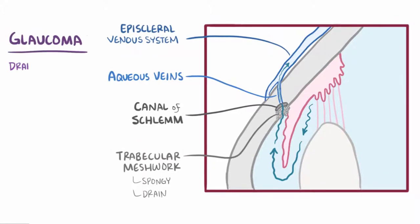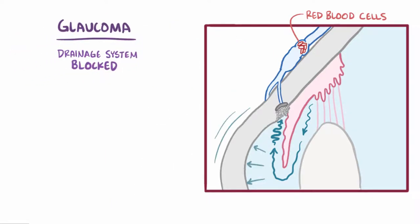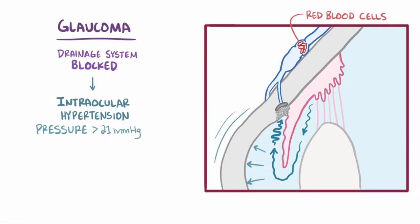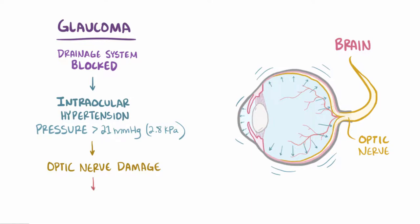In glaucoma, part of this aqueous humor drainage pathway becomes partially or completely blocked — for example by trapped red blood cells or white blood cells — so that fluid can't easily drain out. This causes the pressure within the fixed space of the anterior chamber to quickly build up, causing intraocular hypertension, which is defined as pressure greater than 21 millimeters of mercury, or 2.8 kilopascals. This high pressure affects all the structures of the eye, including the optic nerve, which carries visual information from the eyes to the brain, and over time as the optic nerve gets damaged, glaucoma leads to vision loss.